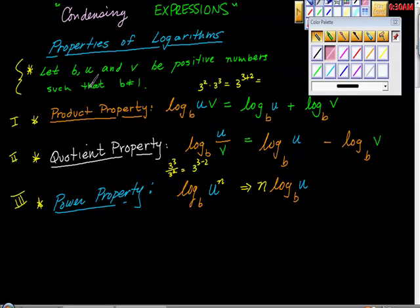Here are these three properties of logarithms that we're going to talk about today. I'd like you to really focus on this detail here. Let b, u, and v be positive numbers such that b is not equal to 1. The first property is the product property that says if we have log base b of u times v, it is equivalent to saying log base b of u plus log base b of v. Here's some proof of why that might be true. Remember that logarithms are another way of expressing exponents. We know that 3 squared times 3 to the third power would be 3 to the 3 plus 2 power, the first property of exponents, isn't it?